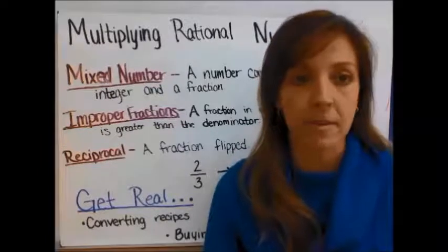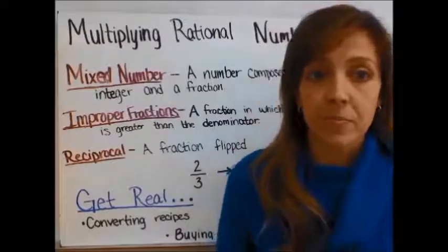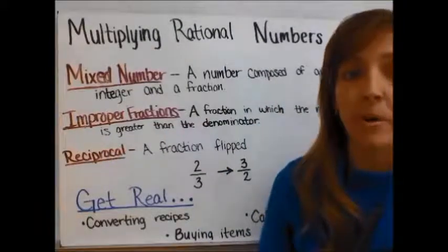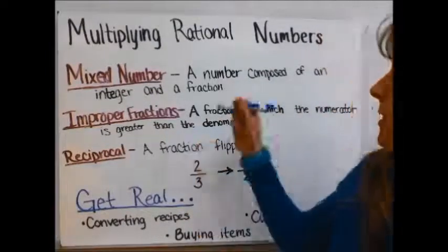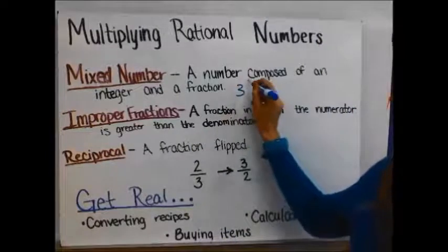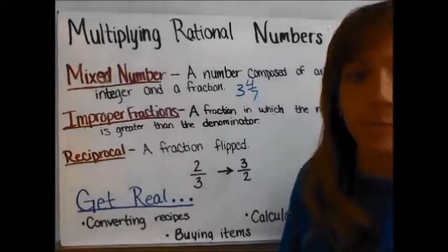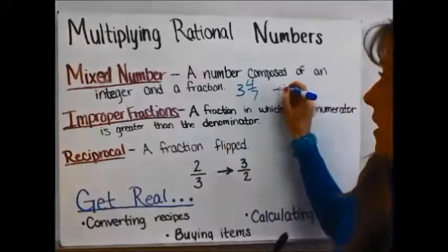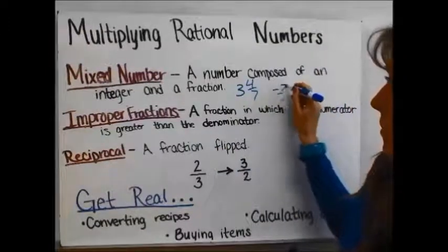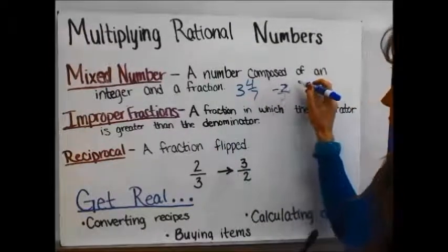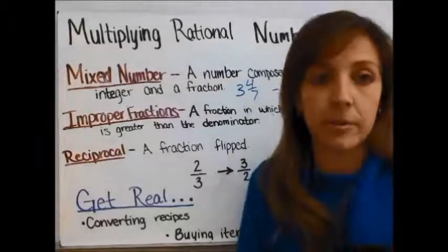First, let's start with a mixed number. A mixed number is a number composed of an integer and a fraction. For example, negative 2 and 2/9ths would also be a mixed number.